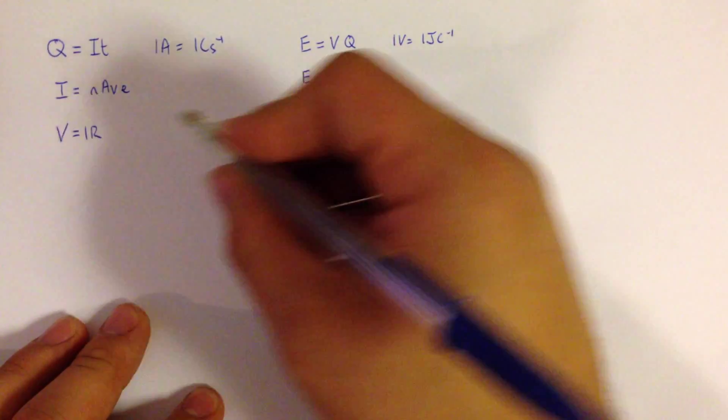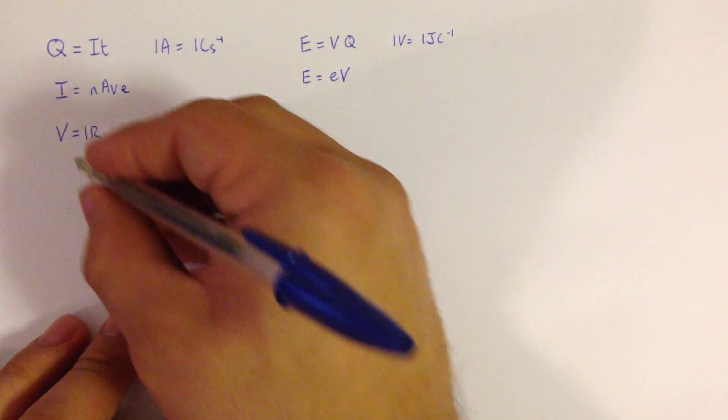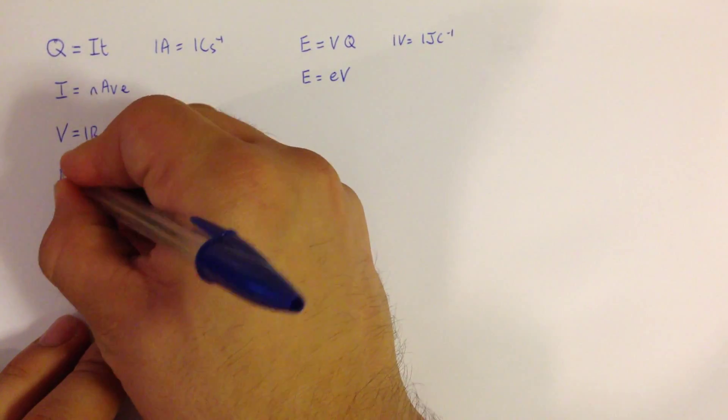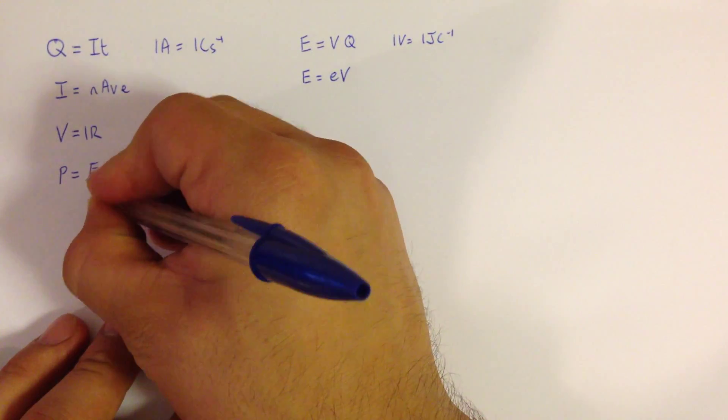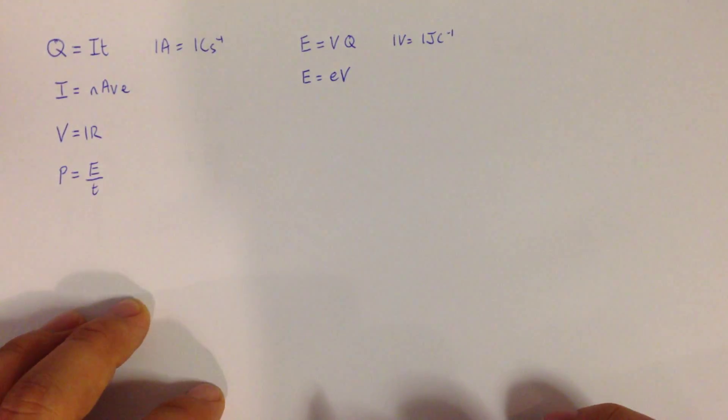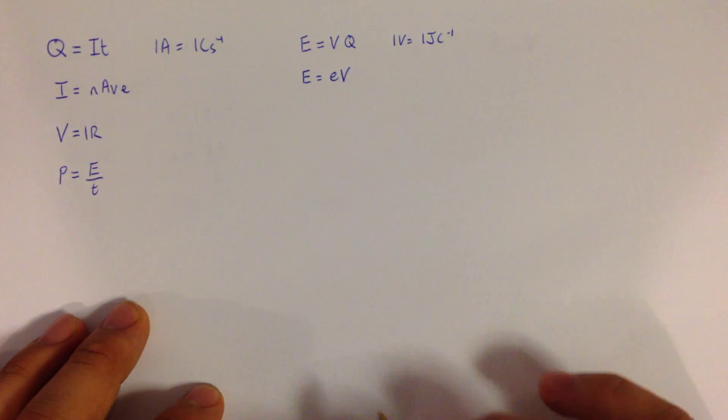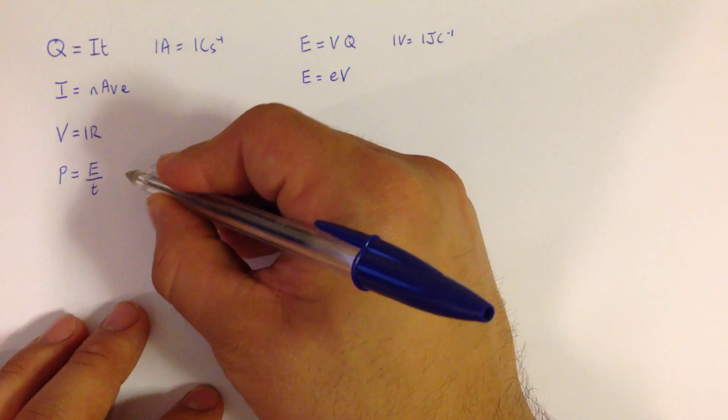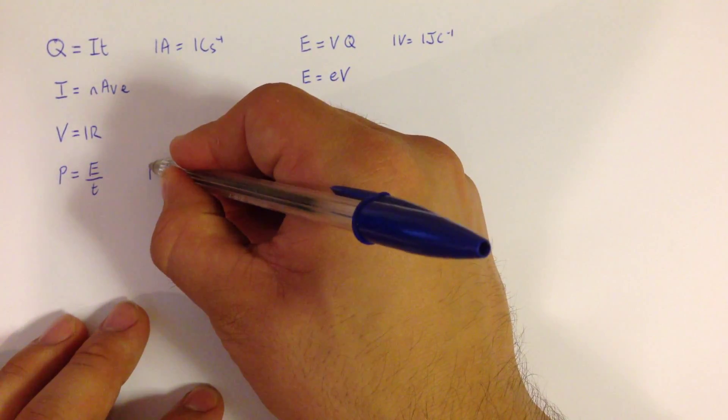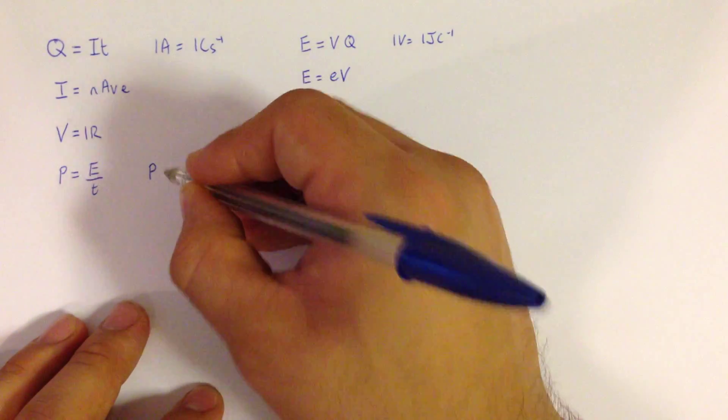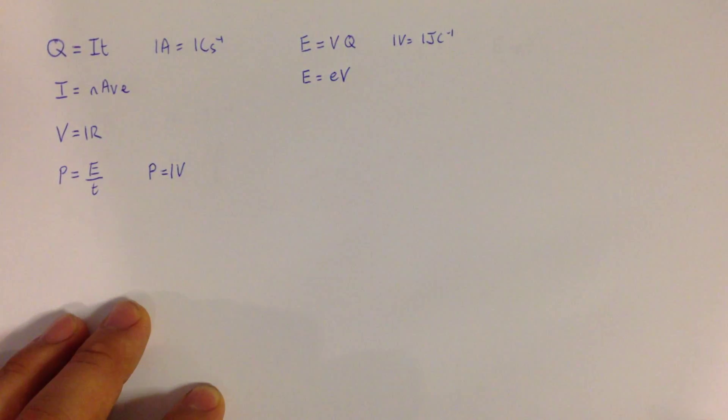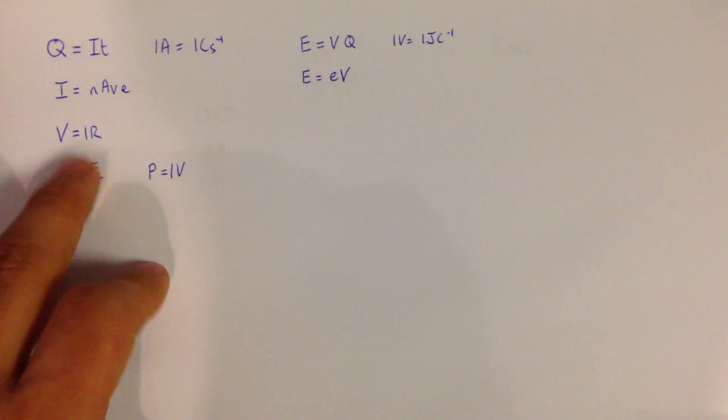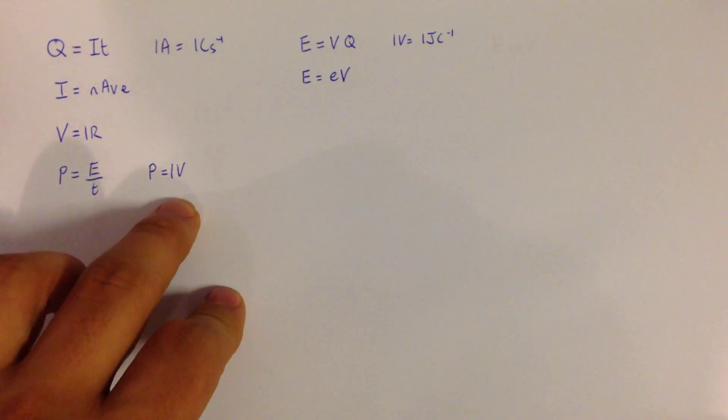We can also substitute that equation into the power equation. So power, there's a couple of power equations. The most basic one is power is energy divided by time. It's the rate of work done. So we can have a special equation for power that we can derive from that, which is power in an electric circuit is current times voltage.